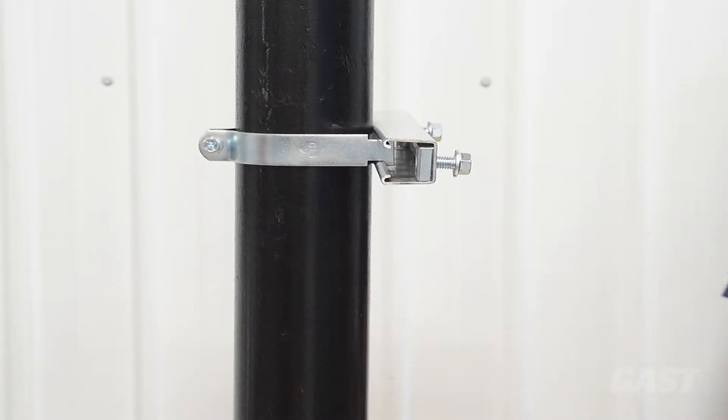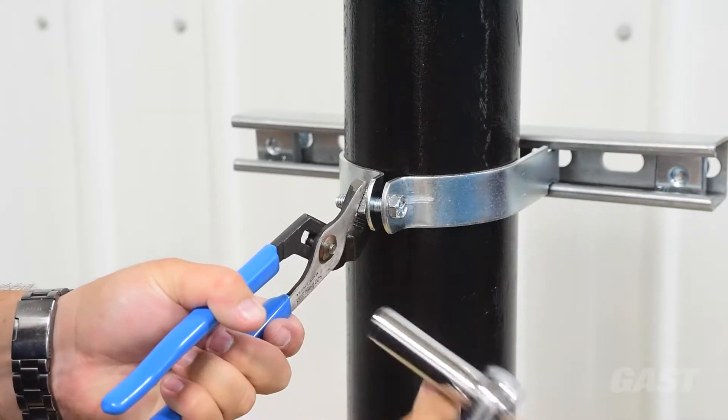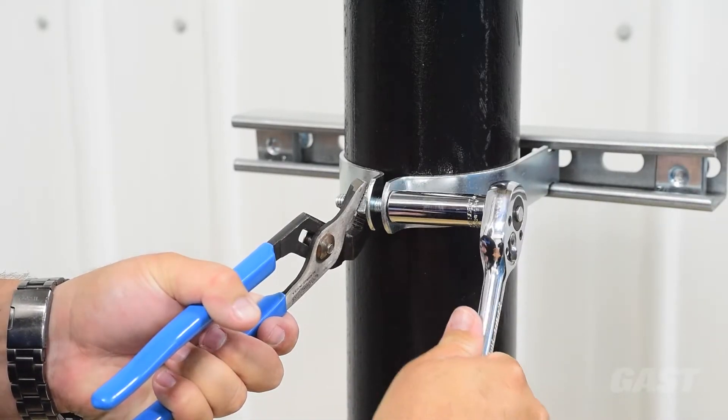Be sure to center and level the strut channel so the system hangs center onto the pipe. Fully tighten the clamp using appropriately sized tools.